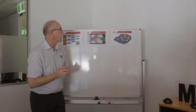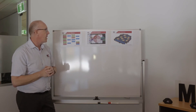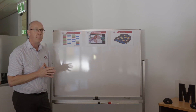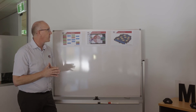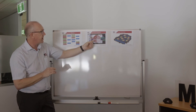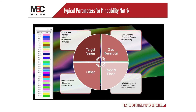The mineability matrix is essentially a combination of factors that will influence the productivity and the rates. The factors that we generally look at are around the target seam — seam thickness, quality, and strength. We talk about the gas reservoir and how that influences the rates, groundwater, and roof and floor characterisation, to make sure that we understand the resource and its influence on production rates.